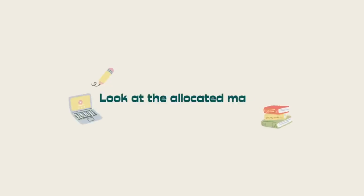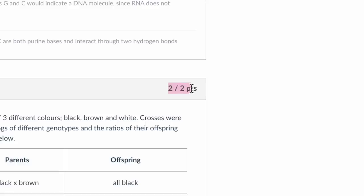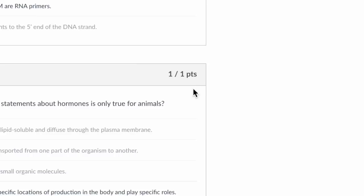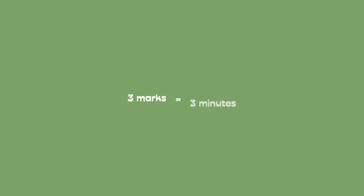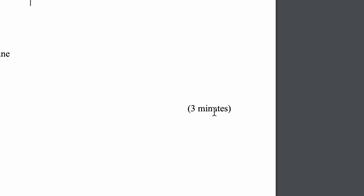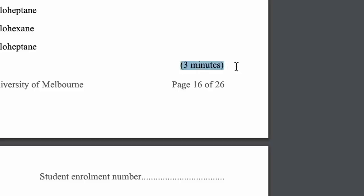Next, look at the allocated marks. In objective questions, they'll usually allocate the amount of marks according to the time you need to answer them — three marks for a three minute question and one mark for a one minute question. So skip to the higher mark questions and answer those first, because if you run out of time, you can just guess the answers to the lower mark questions. That way, the amount of marks you lose will be much lower.